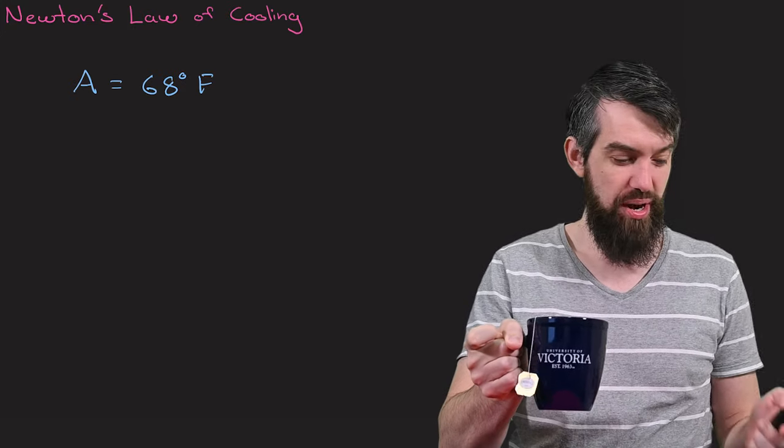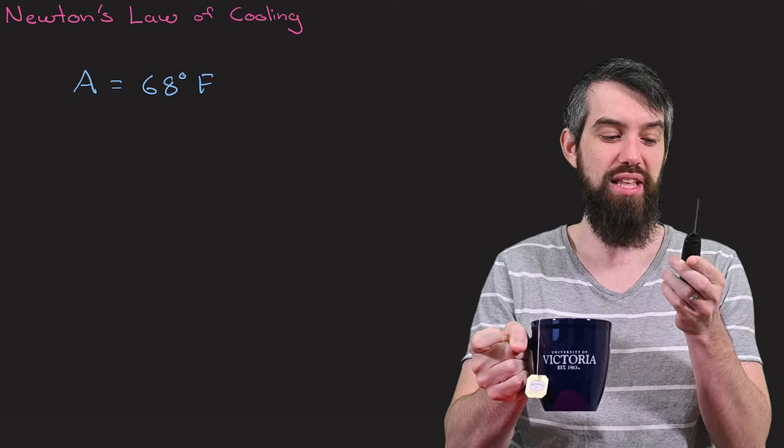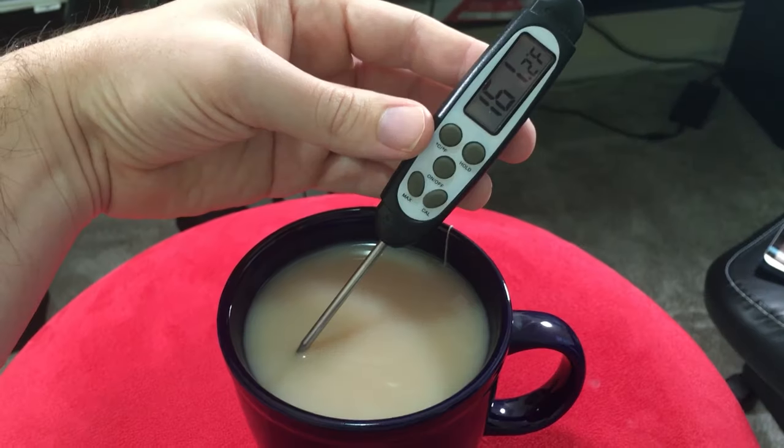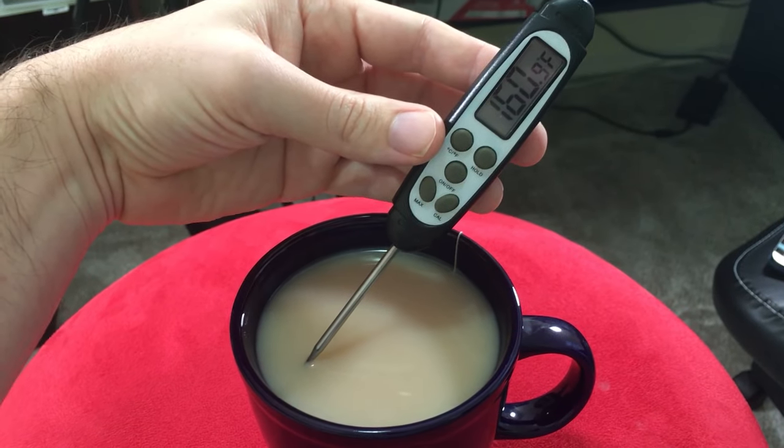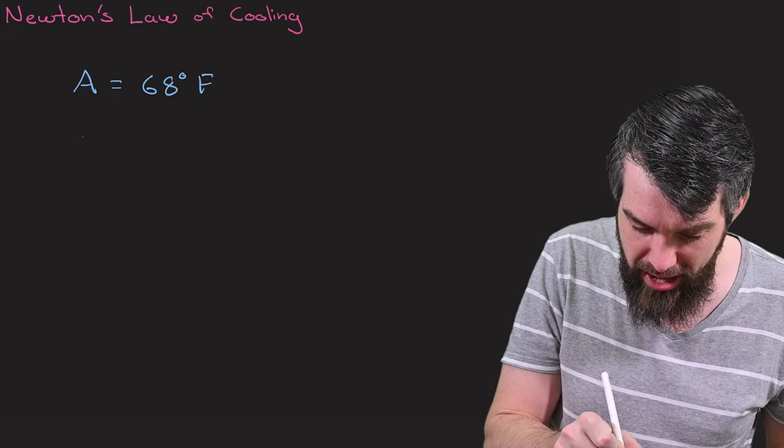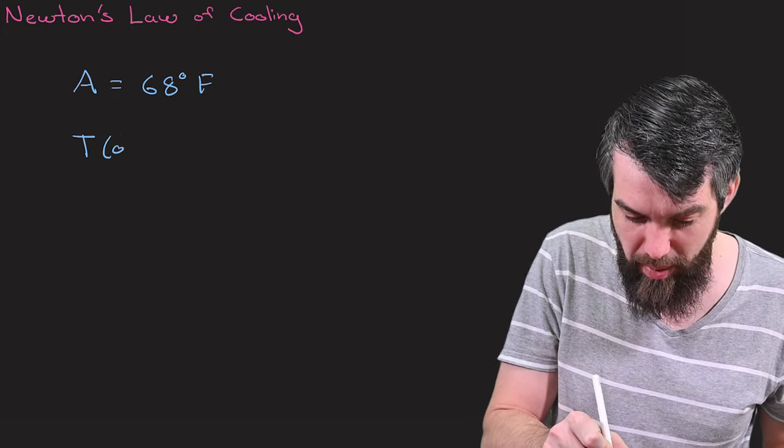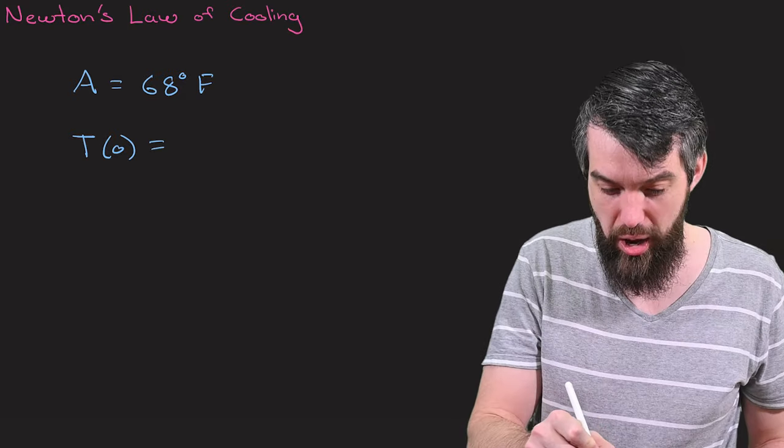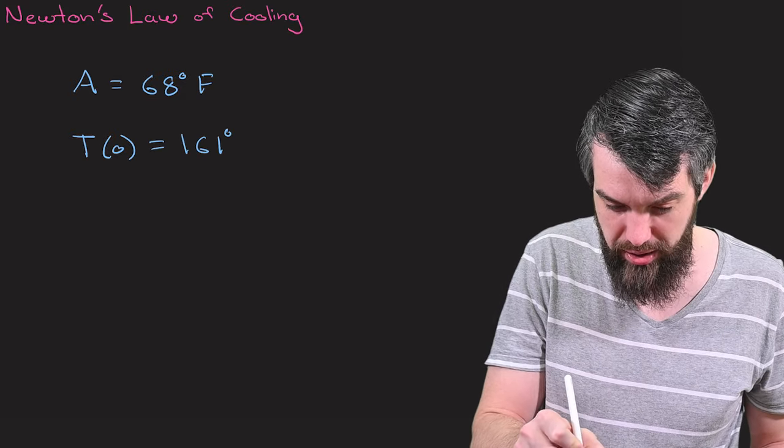Alright, so I've got my tea, but I now want to figure out exactly how hot it is. And that's looking at about 161 degrees Celsius. So I'll write that down, and I have that the temperature, which I'll denote by T at time t equal to zero, was 161 degrees Fahrenheit.